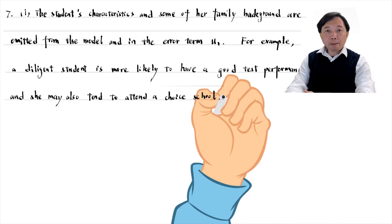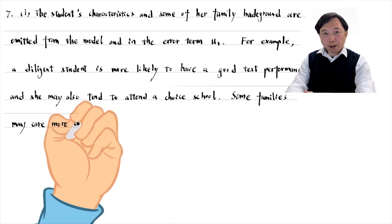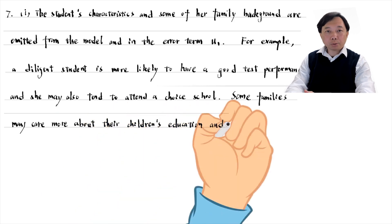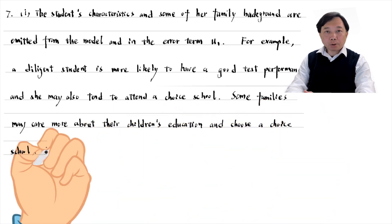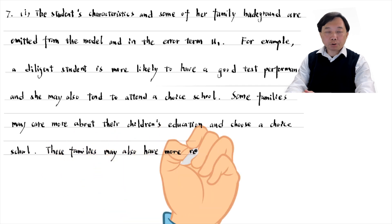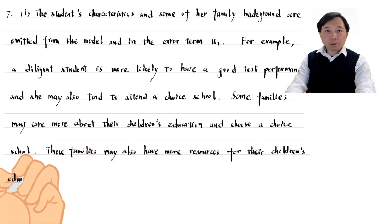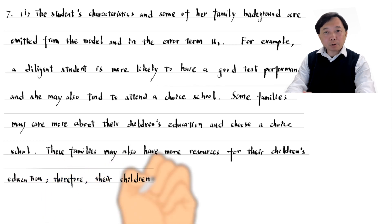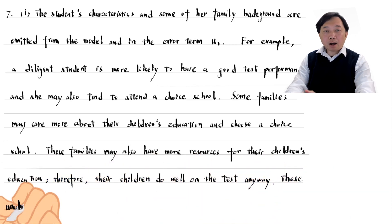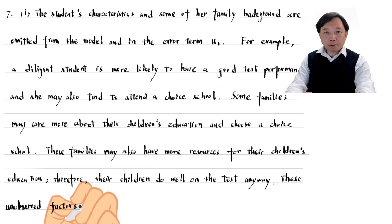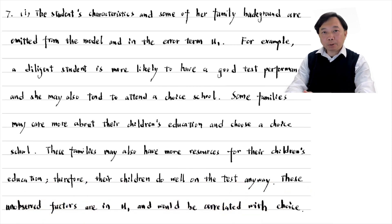Some families may care more about their children's education and choose a choice school. These families may also have more resources for their children's education. Therefore, their children do well on the test anyway. These unobserved factors are in the error term and would be correlated with the explanatory variable choice.